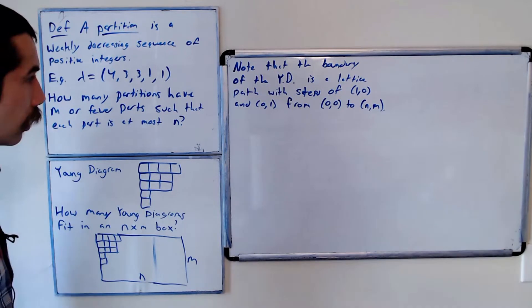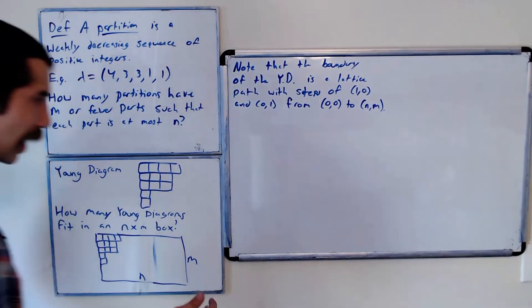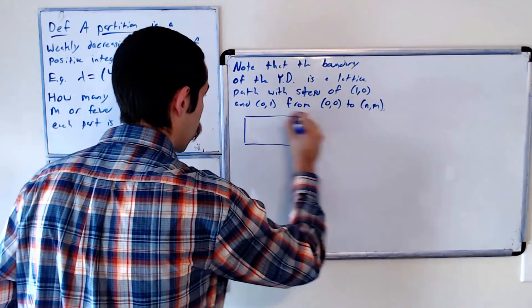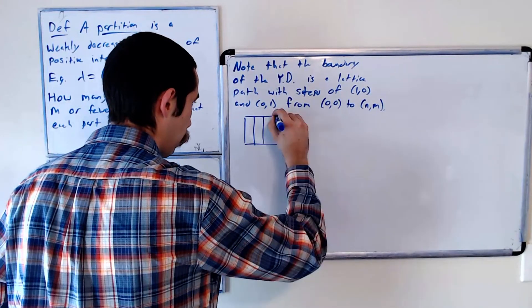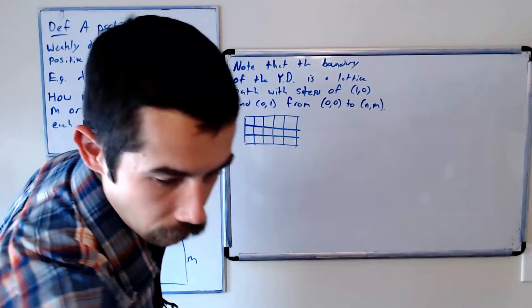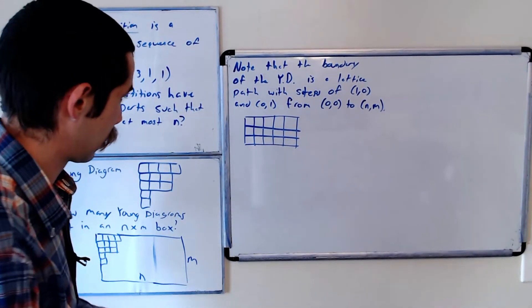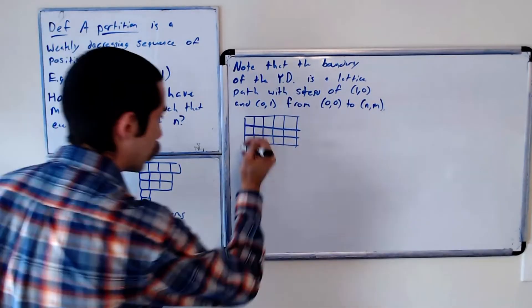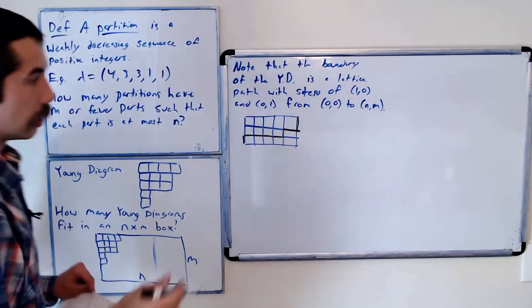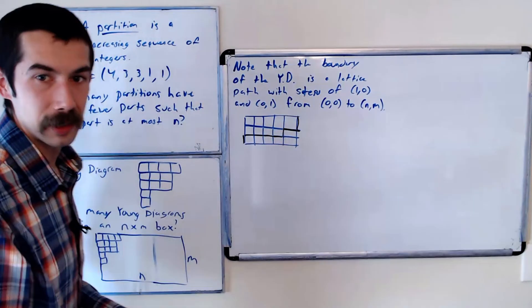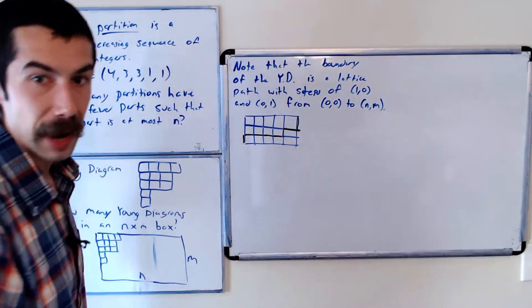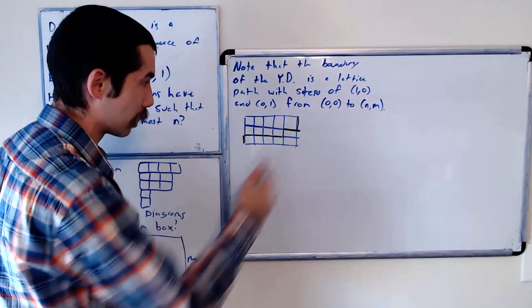It's not hard to check that given a lattice path—let's say we had a lattice path that goes from (0,0) to (5,3)—so given a lattice path, let's say it goes north and then a couple of east steps, you could see that there is a partition associated with it. This lattice path is associated with the partition 5, 4. It has at most three parts with biggest part at most five.